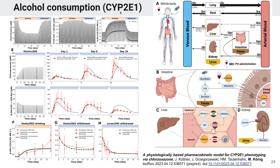Similar things can be done for alcohol consumption. In this case, using a model of chlorzoxazone, we were interested in the induction of CYP2E1 via alcohol consumption and how this would return to baseline after abstinence from alcohol. This is an important question because this test is mainly used in alcoholics to determine the status of liver function. Alcohol consumption strongly changes chlorzoxazone clearance, whereas abstinence changes it back to baseline. This is an important confounding factor, and such a computational model approach allows to correct for that.